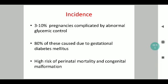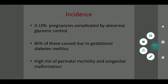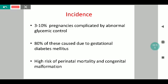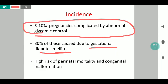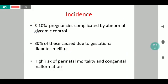In terms of incidence, 80% of infants of diabetic mothers are associated with gestational diabetes, and only 3-10% of pregnancies are complicated by abnormal glycemic control. These babies are at high risk of perinatal mortality, mainly because of the congenital malformations they face.